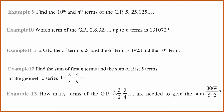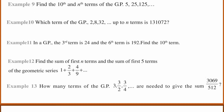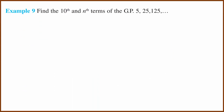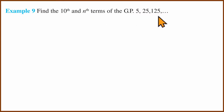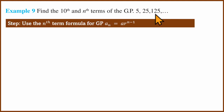Welcome to this video. In this video, the example is on Geometric Progression. First question: find the tenth term and the nth term of the Geometric Progression. The Geometric Progression is 5, 25, and 125. Take a look at the steps.